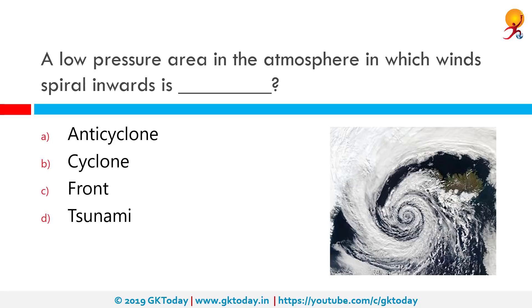A low pressure area in the atmosphere in which winds spiral inwards is known as a cyclone. In meteorology, a cyclone is a large-scale air mass that rotates around a strong center of low atmospheric pressure. Cyclones are characterized by inward spiraling winds that rotate about a zone of low pressure. If you see the diagram, you can see the center and the spiral going towards it — that's a cyclone.